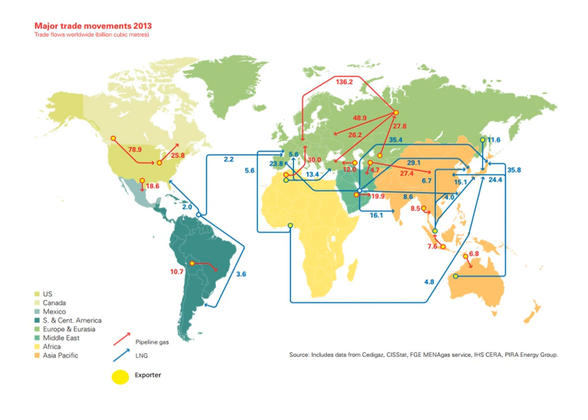Natural gas is a fossil fuel used as a source of energy for heating, cooking, and electricity generation. It is also used as a fuel for vehicles and as a chemical feedstock in the manufacture of plastics and other commercially important organic chemicals.